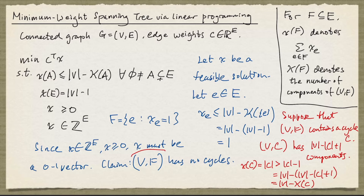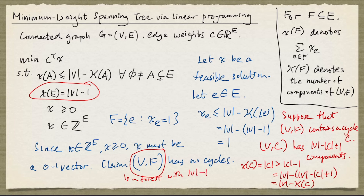So the graph V comma F is a forest. The number of edges it has, according to this equality, is exactly the number of nodes minus one, so it is in fact a tree. It's a spanning tree because its node set is the same as the node set of graph G. So we have shown that any feasible solution is the incidence vector of a spanning tree.